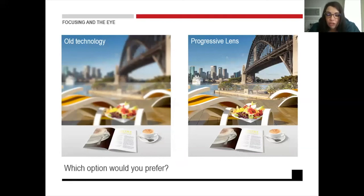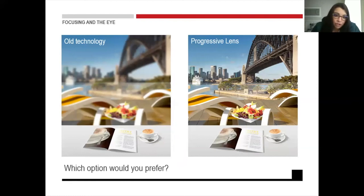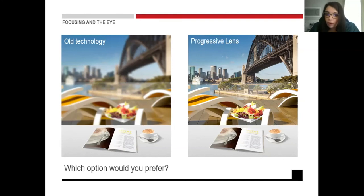This is a picture of someone who is presbyopic and needs a reading add. On the left-hand side, the patient is wearing reading glasses — you can see that the near vision is clear, but when they look up, the distance vision is blurry. On the right-hand side, the same patient is wearing progressive lenses, so their vision will be clear at near, intermediate, and distance.